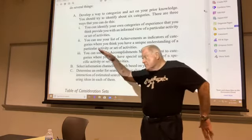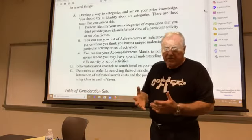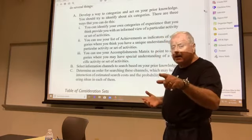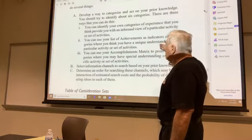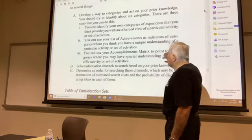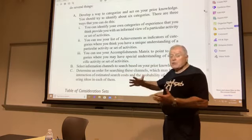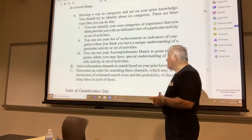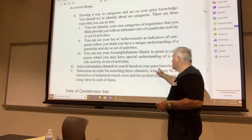Your knowledge domains might include dance, cooking, sports, something work-related, something IT-related, something firearms-related — you would have identified those knowledge domains. If you identified four, you're going to build four consideration sets. Use your list of achievements as indicators and use your accomplishment matrix to converge on what domains you have competence in, where you possess meaningful knowledge. It would be in those knowledge domains where you create consideration sets.